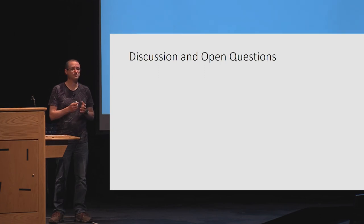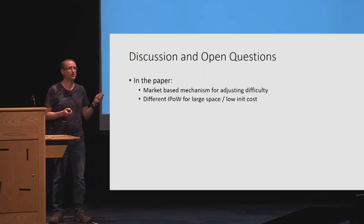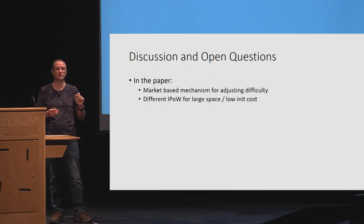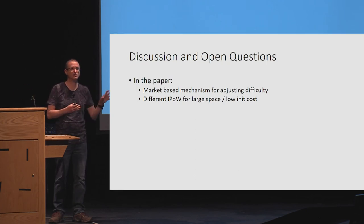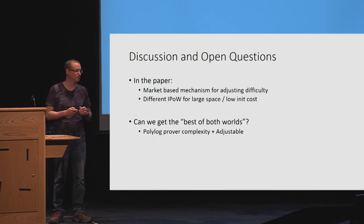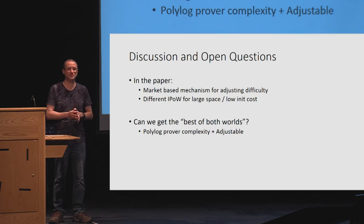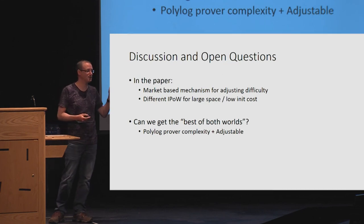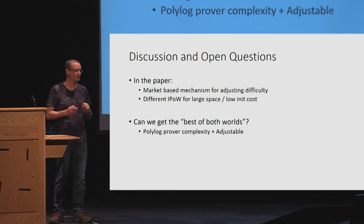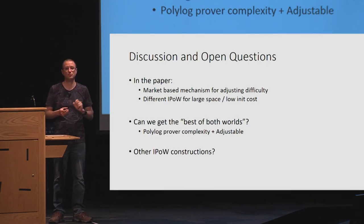Some things not shown in this talk but present in the paper: the market-based mechanism for detecting when users are using work instead of storage, and subtleties about how much work is needed to fill a certain size table. For some parameters we want to use a different proof of work — also extremely simple, just run the hash once and take a few bits — and we show that is also incompressible. Open questions include: can we get the best of both worlds combining proofs of space and proofs of space-time, achieving low prover complexity and adjustable difficulty? And can we show that other proof-of-work constructions are also incompressible and usable in this framework?